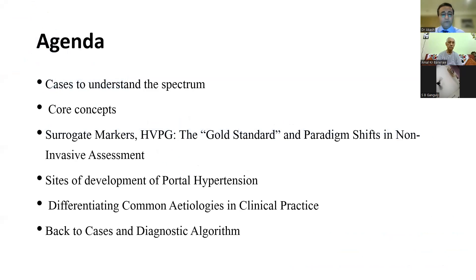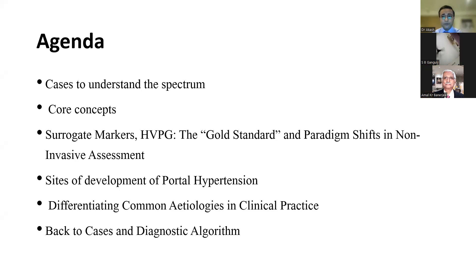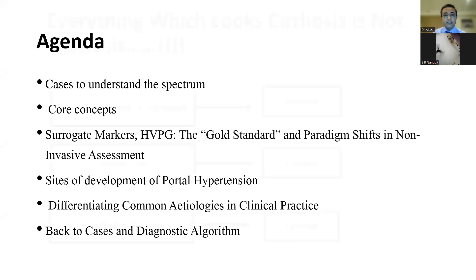I understand we have a mixed crowd, including medicine students who need to understand this in detail so that their approach towards any patient with portal hypertension becomes specific. I've divided the agenda as follows: I'll initially take up three cases to understand how portal hypertension can actually differ in different circumstances, then understand core concepts, surrogate markers, hepatic venous pressure gradient as the gold standard, paradigm shifts in non-invasive assessment, sites of obstruction, differentiating between common etiologies, and then return to the original cases.